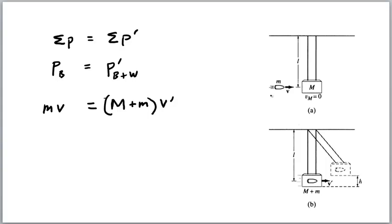So, the velocity of the bullet beforehand, which is our task here, will be mass of the block plus mass of the bullet, times the velocity of the system afterwards, over the mass of the bullet.